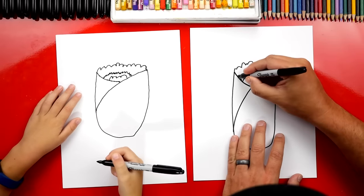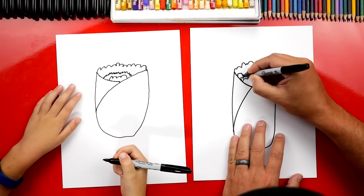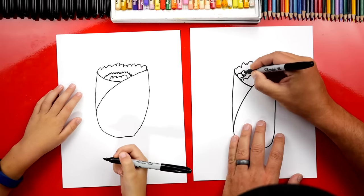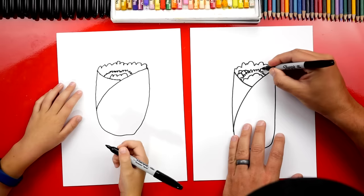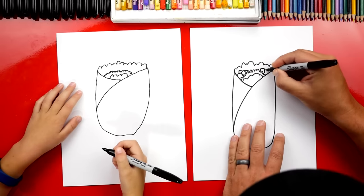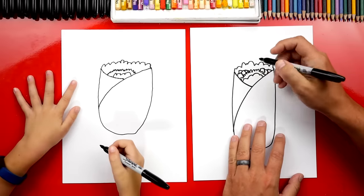Now I'm going to add some tomatoes, and I'm going to draw them chopped up, so I'm drawing little squares like this. Or this could be the steak too. I like steak burritos. I'm adding little squares over here too. This could be salsa or the steak. You could also add guacamole.